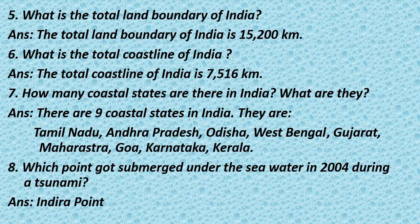Question 5: What is the total land boundary of India? Answer: The total land boundary of India is 15,200 kilometres. Question 6: What is the total coastline of India? Answer: The total coastline of India is 7,516 kilometres. Question 7: How many coastal states are there in India? Answer: There are 9 coastal states in India. Question 8: Which point got submerged under sea water in 2004 during the tsunami? Answer: Indira Point.